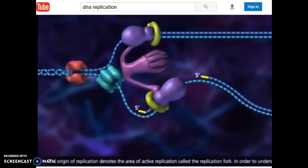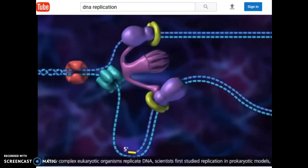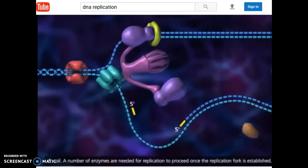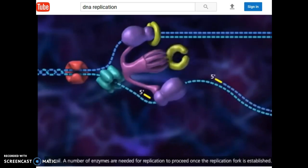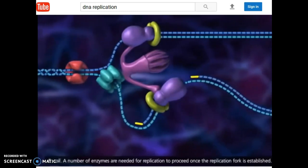In order to understand how complex eukaryotic organisms replicate DNA, scientists first studied replication in prokaryotic models like E. coli. A number of enzymes are needed for replication to proceed once the replication fork is established.